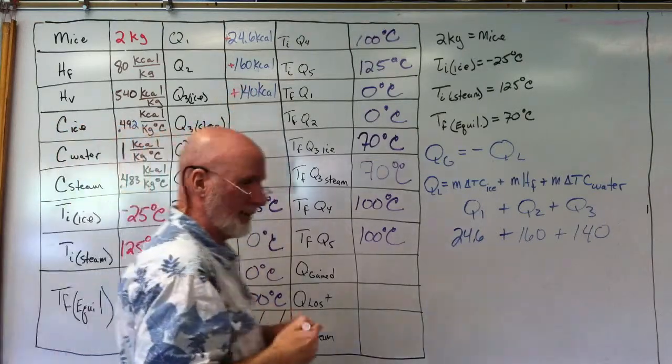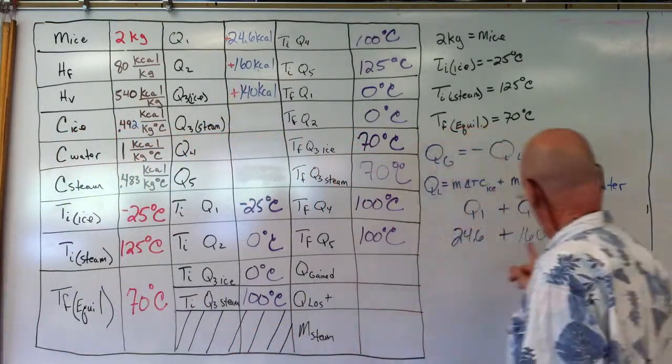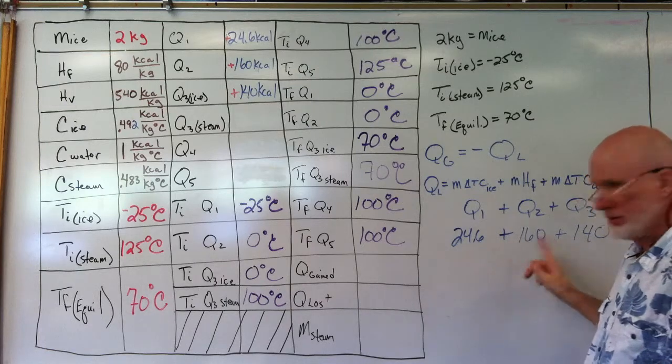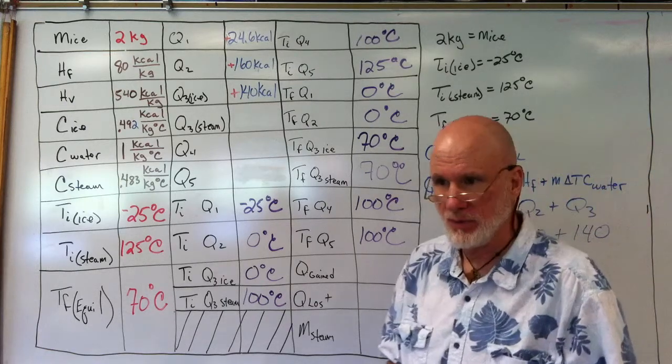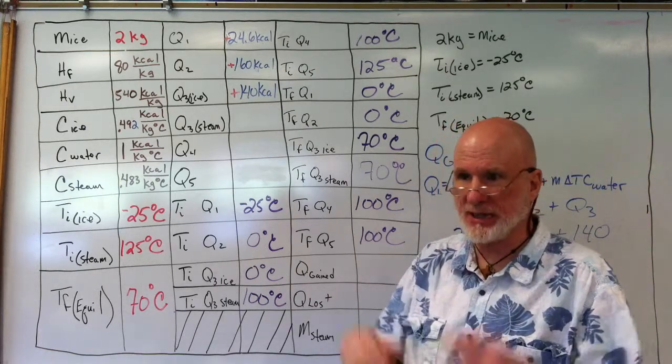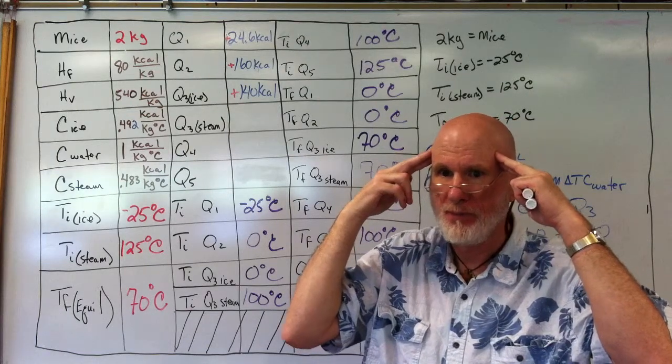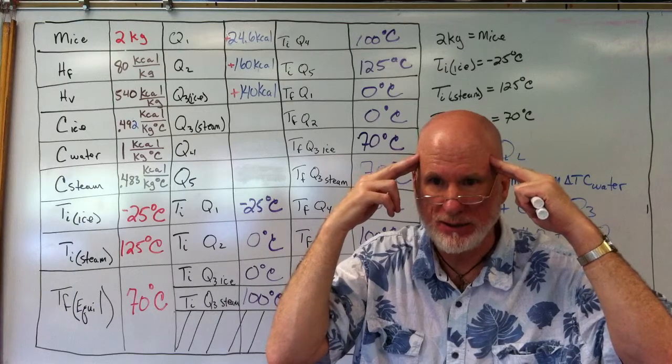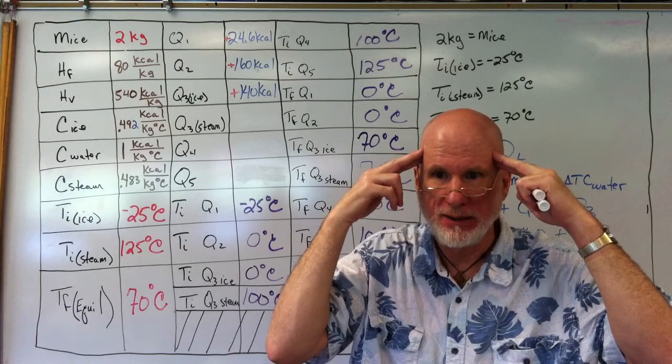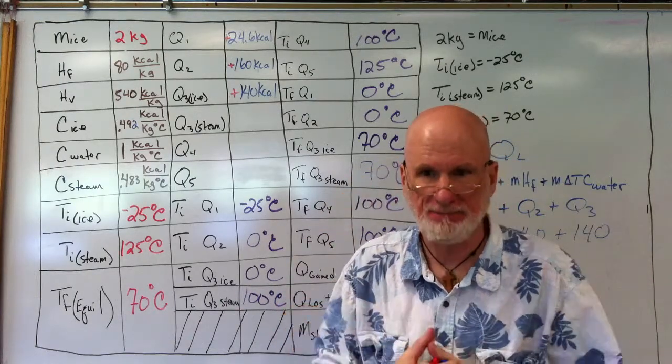And we add them all up. So what is it? 324.6. So that is what? Heat gained or heat lost? Heat lost? Gained? She made a mistake. I made a mistake. Gained.